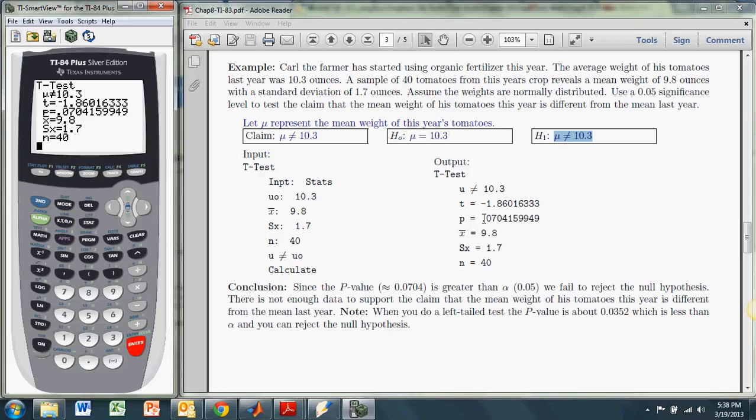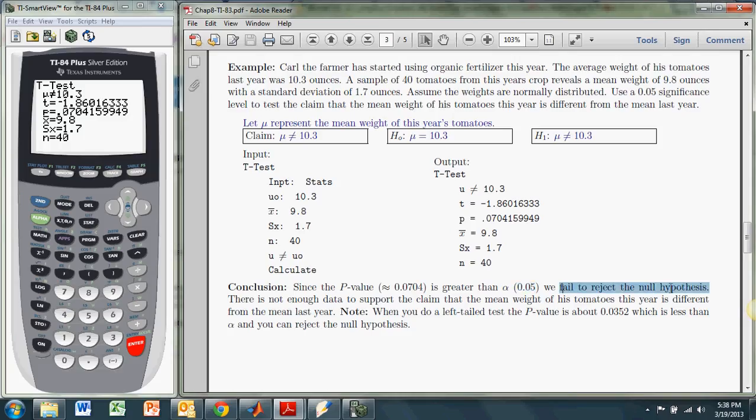But once we have the p-value, 0.0704, we compare it to the significance level, and we see that the p-value is bigger. It's greater than the significance level. So we fail to reject the null hypothesis, and if we fail to reject the null hypothesis, that does not bode well for our claim. It means we don't have enough data to support our claim. So the final conclusion goes something like, there's not enough data to support the claim that the mean weight of the tomatoes this year is different from last year.